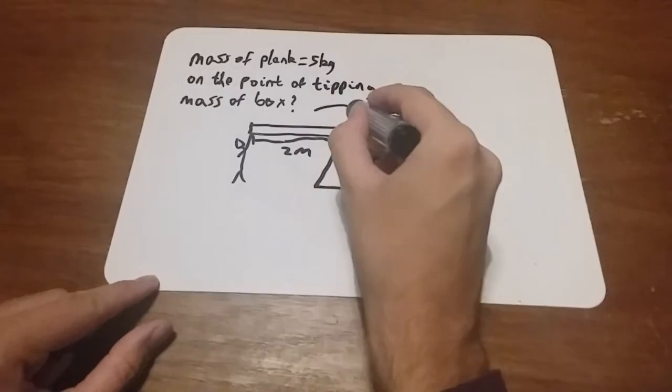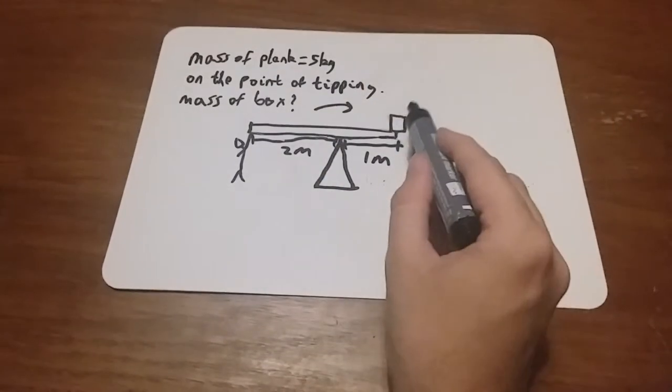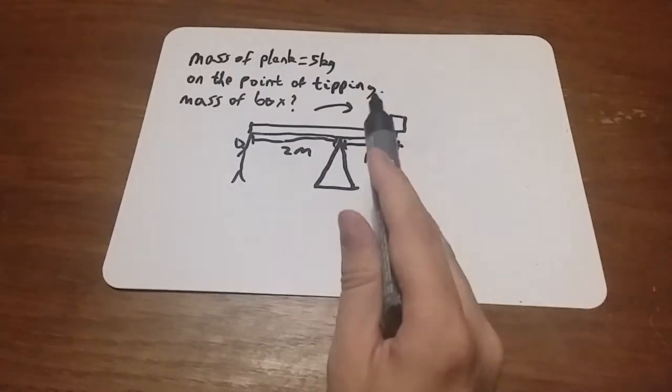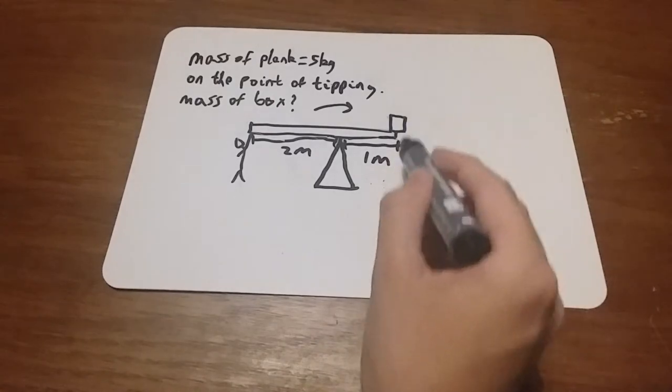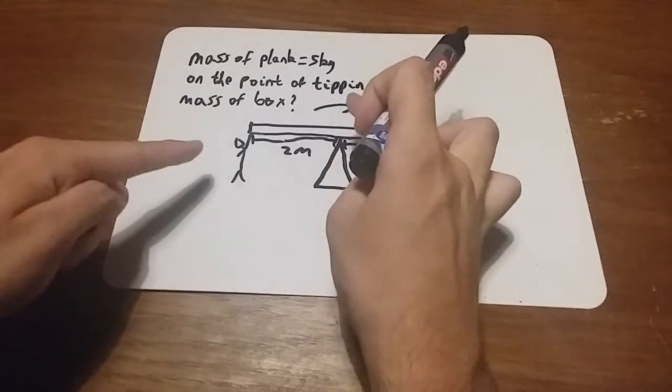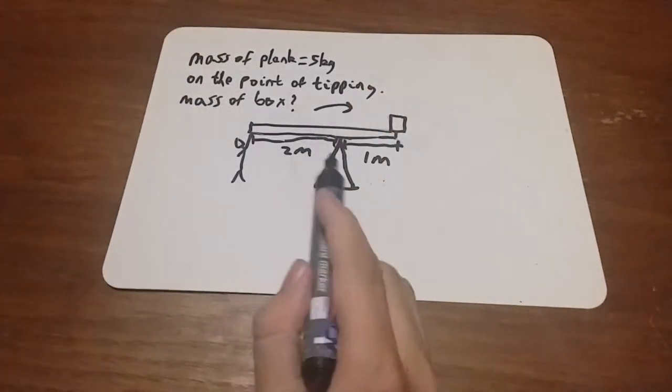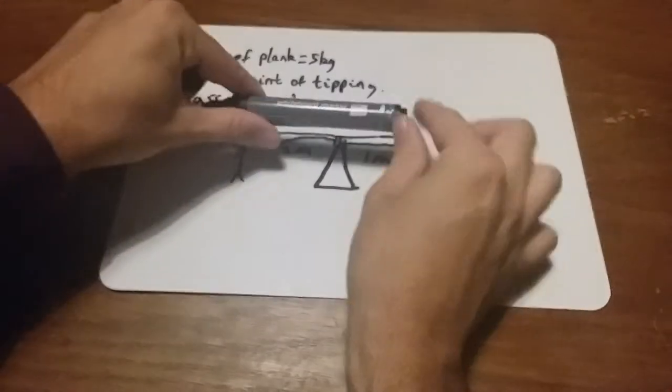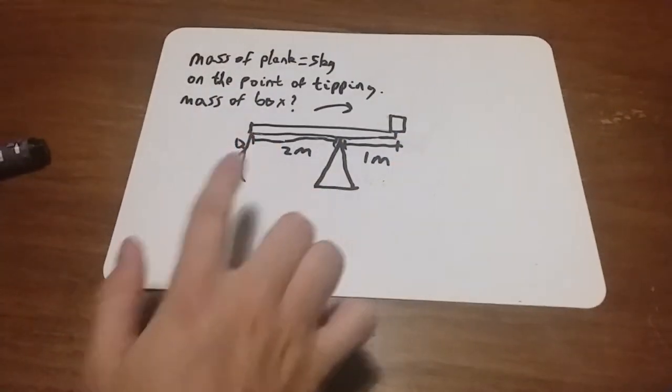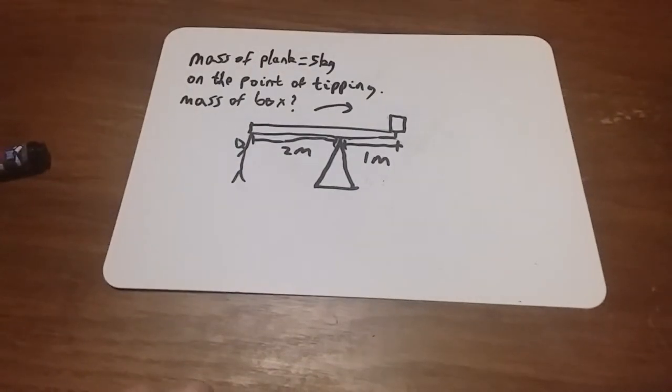It's just about to go that way. If this mass had any more mass in it, it would start to fall down and the whole thing would tip. The important point is if this is about to tip, then the amount this person is having to hold up will get to zero.